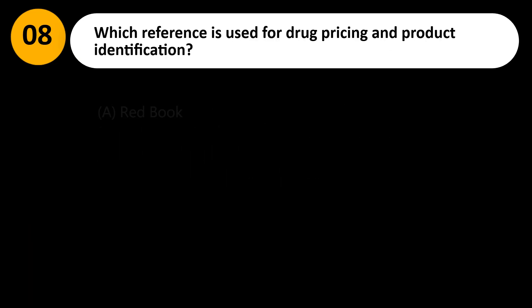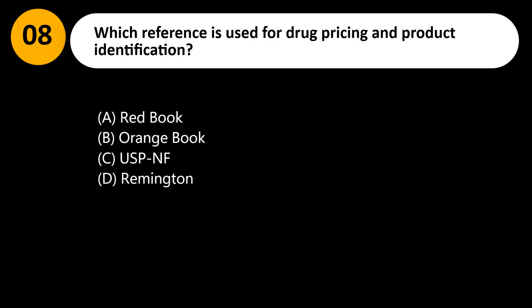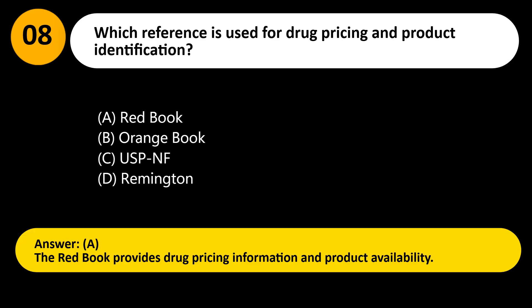Which reference is used for drug pricing and product identification? A. Redbook. B. Orange Book. C. USP&NF. D. Remington. Answer: A. The Redbook provides drug pricing information and product availability.